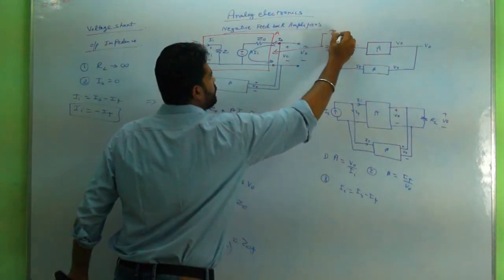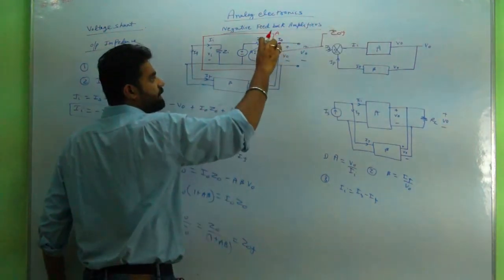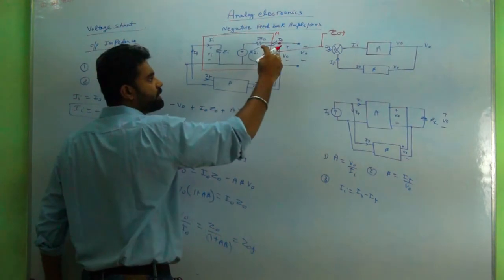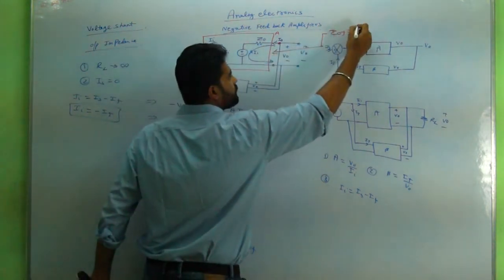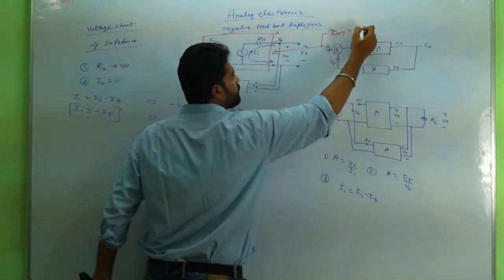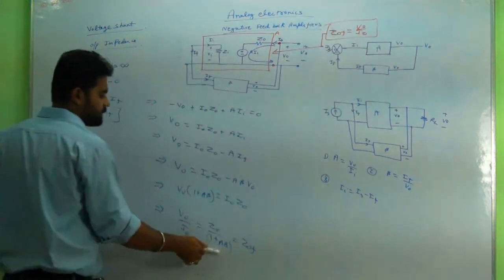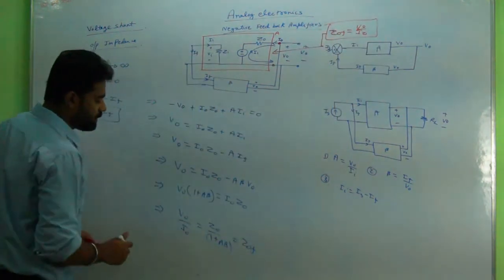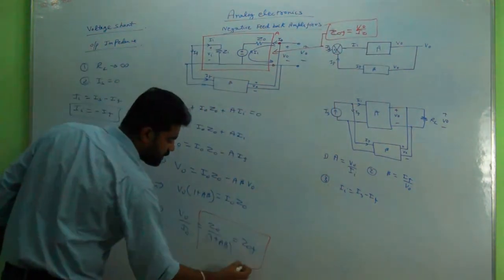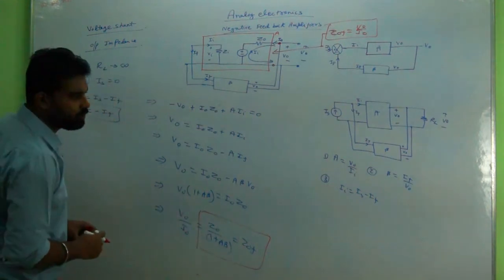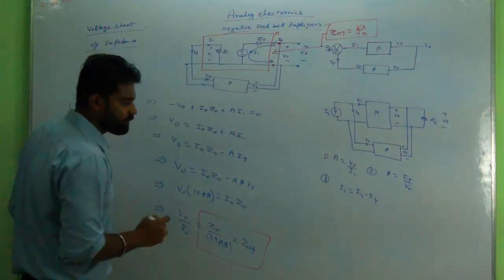The amount of voltage available at the output is V_naught and the amount of current available is I_naught, so ZOF = V_naught / I_naught. This confirms that ZOF = Z_naught / (1 + Aβ).